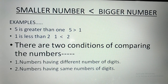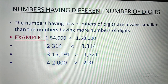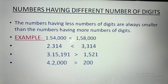There are two conditions for comparing numbers. The first is numbers having different numbers of digits, and the second is numbers having the same number of digits. The numbers having fewer digits are always smaller than the numbers having more digits.